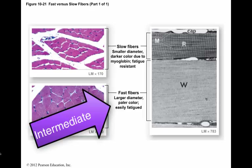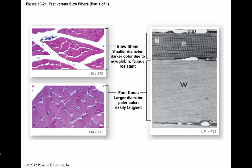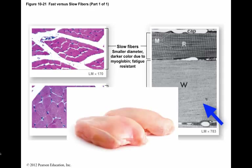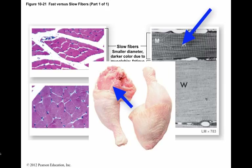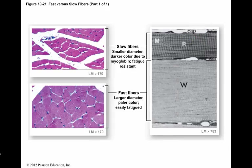Intermediate fibers most closely resemble fast fibers, for they contain little myoglobin and are relatively pale. They do have an intermediate capillary network and mitochondrial supply and are more resistant to fatigue than fast fibers. Muscles dominated by fast fibers appear pale and are often called white muscles or white meat. Chicken breasts contain white meat because chickens use their wings only for brief intervals, as when fleeing a predator. Muscles dominated by slow fibers are known as red muscles or red meat. Chickens walk around all day, so their legs contain dark meat, which contains the capillaries and myoglobin. Most human muscles contain a mixture of fiber types and so appear pink.